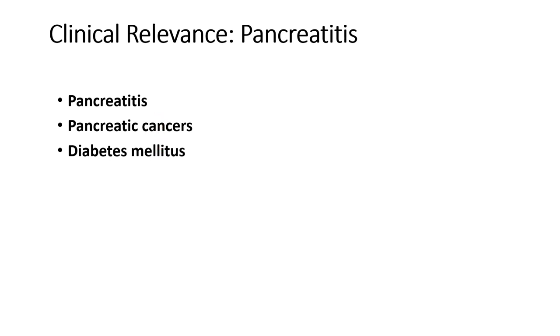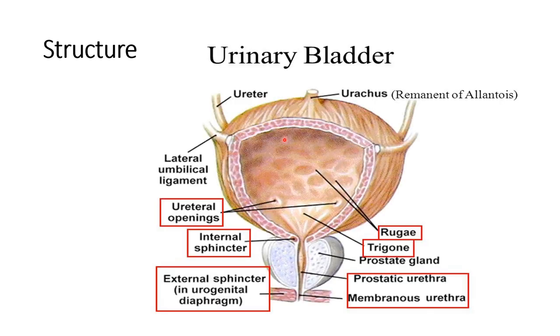This is about the answer sheet of pancreas. Detailed videos are available in this channel; please watch to expand your answer further. Coming to the sixth question, that is the structure of urinary bladder. You can see the structure of urinary bladder, which consists of ureter, lateral umbilical ligament, ureteral opening, internal sphincter, external sphincter, prostatic urethra in male, prostatic gland, trigone, and uracus. Draw this structure in your answer sheet and explain each labelled part.